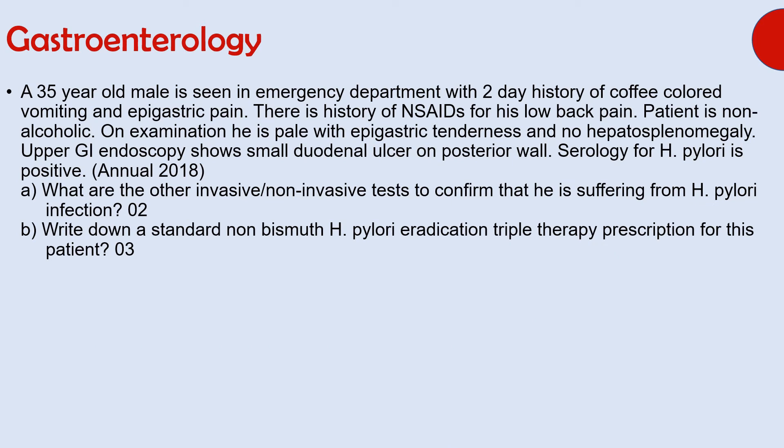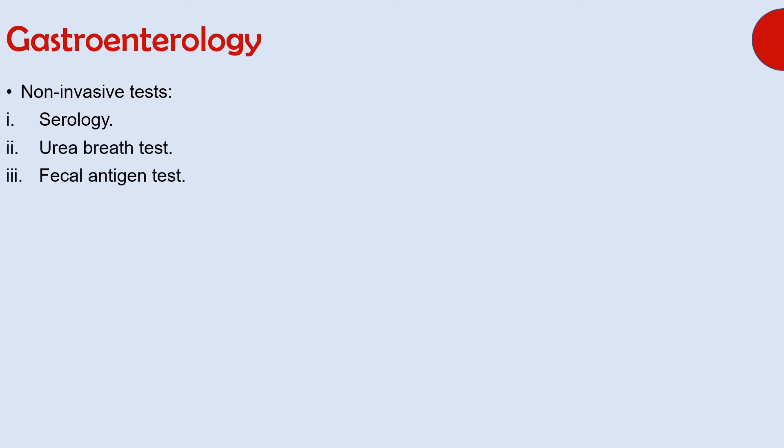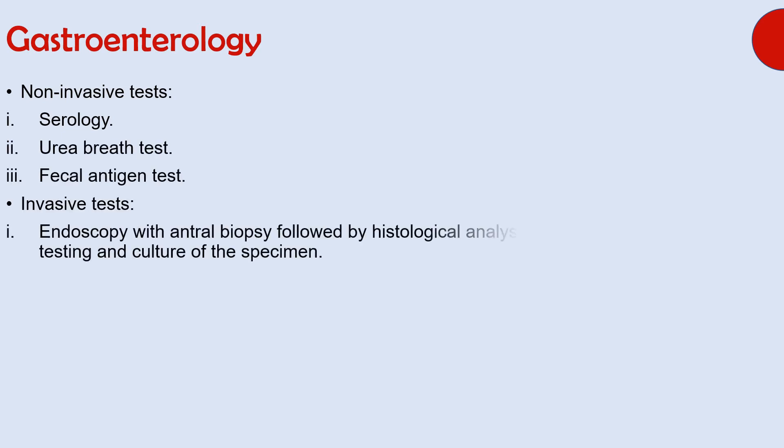Since the next question does not ask about diagnosis, let's see the answers. The first part asked about non-invasive and invasive tests to confirm H. pylori infection. Non-invasive tests include serology, urea breath test, and fecal antigen test. Invasive tests include endoscopy with antral biopsy followed by histological analysis, rapid urease testing, and culture of that biopsy specimen.